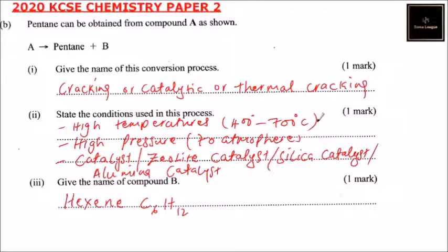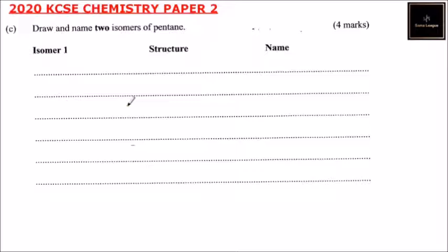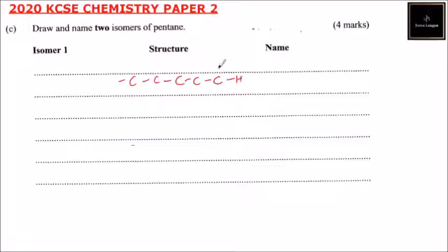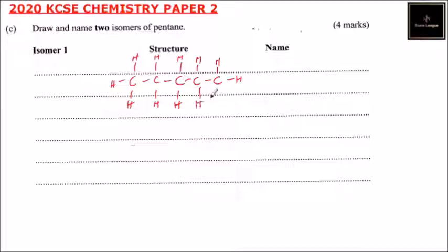Part C: draw and name two isomers of pentane. The first structure is pentane itself — five carbon atoms in a straight chain, with hydrogen atoms covering all four bonds of each carbon.